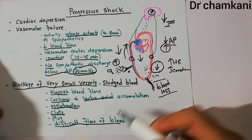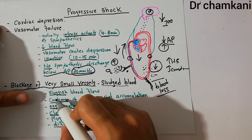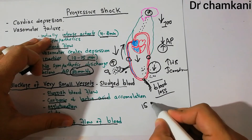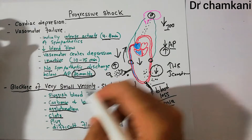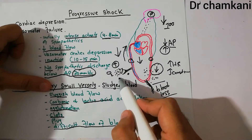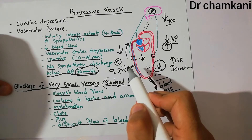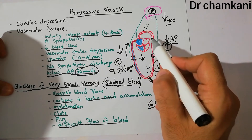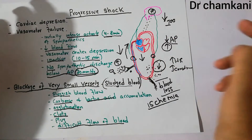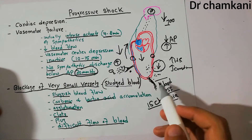Once clots are formed these blood vessels are plugged and blood flow is very difficult. Even without complete clots, due to accumulation of acids like lactic acid and carbonic acid and substances formed due to ischemia — which is decreased blood flow to tissue — blood flow through these vessels becomes so sluggish that this is known as sludged blood. This sludged blood occurs initially in very small vessels at the tissue level where nutrients are directly supplied to cells. Large vessels are not initially affected; clot formation or sluggish flow in larger vessels would only occur in irreversible conditions.